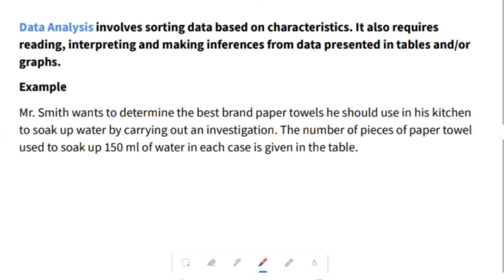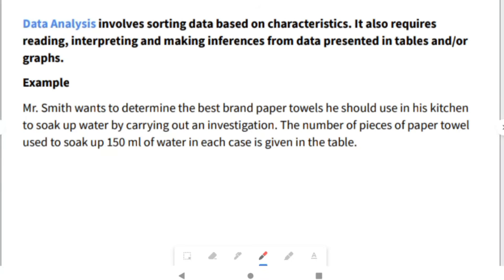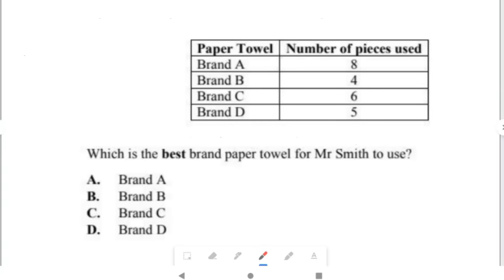Data analysis involves sorting data based on characteristics. It also requires reading, interpreting, and making inferences from data presented in tables and or graphs. For example, Mr. Smith wants to determine the best brand paper towel he should use in his kitchen to soak up water by carrying out an investigation. The number of pieces of paper towel used to soak up 150 ml of water in each case is given in the table. This is a table. You have brand A, B, C, and D. Brand A uses 8 pieces. Brand B uses 4 pieces. Brand C uses 6 pieces. Brand D uses 5 pieces. Which is the best brand paper towel for Mr. Smith to use? People want to use less. So, if he wants to use less, then, the one that is suitable would be brand B because it only uses 4 pieces to soak up the water.